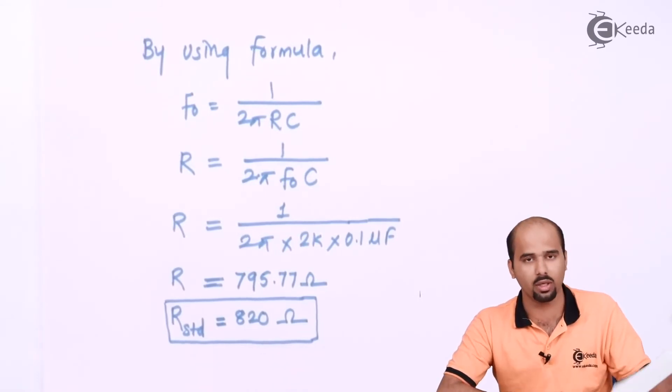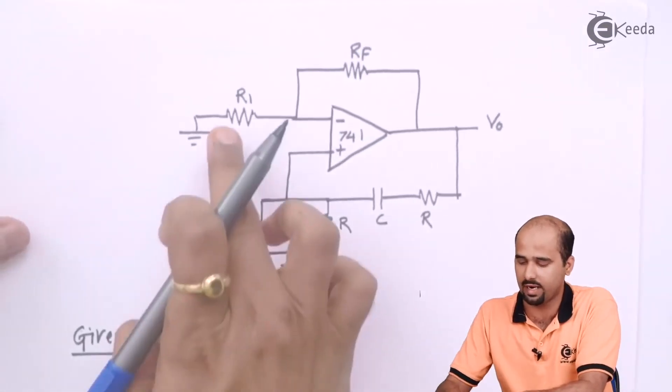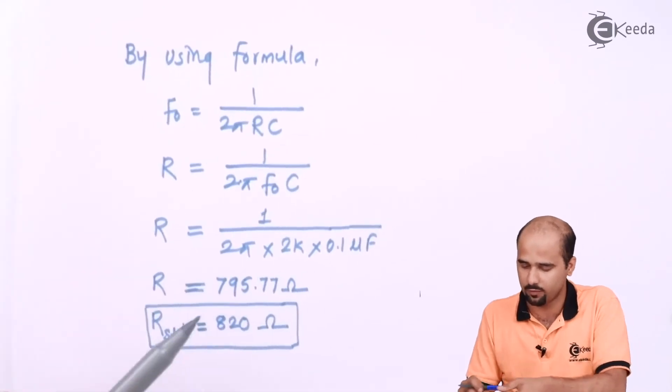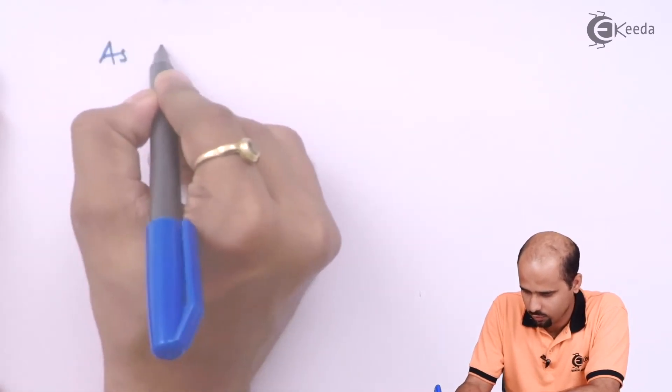Now we have to determine what will be the value of RF and R1. Resistance and capacitor are done. We have to find out what will be the value of RF, what will be the value of R1.